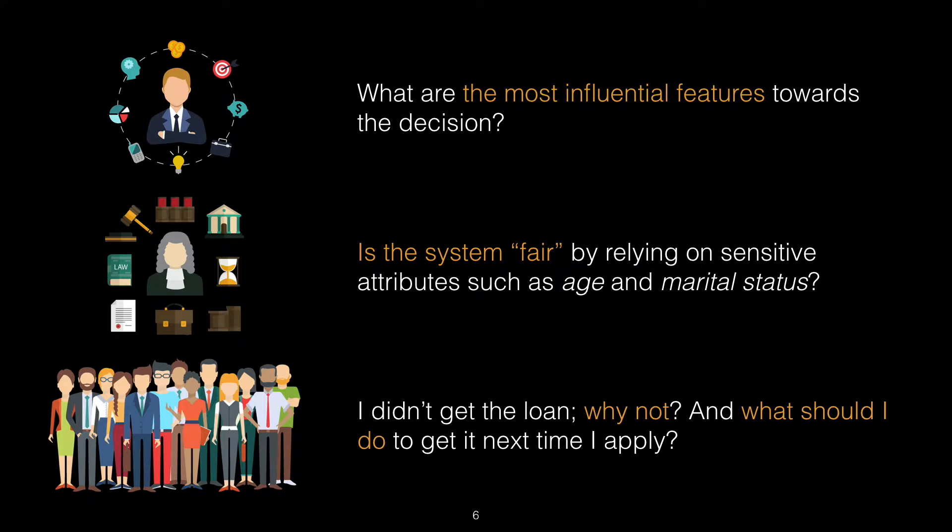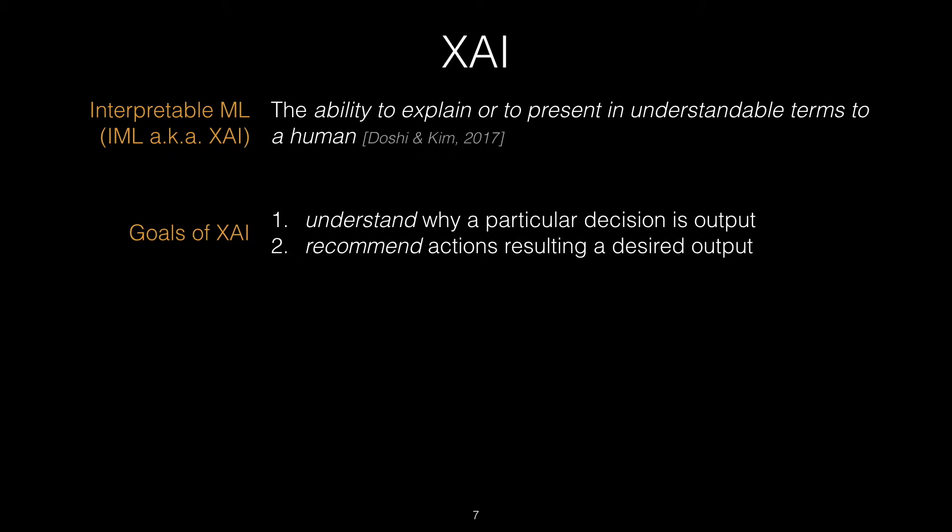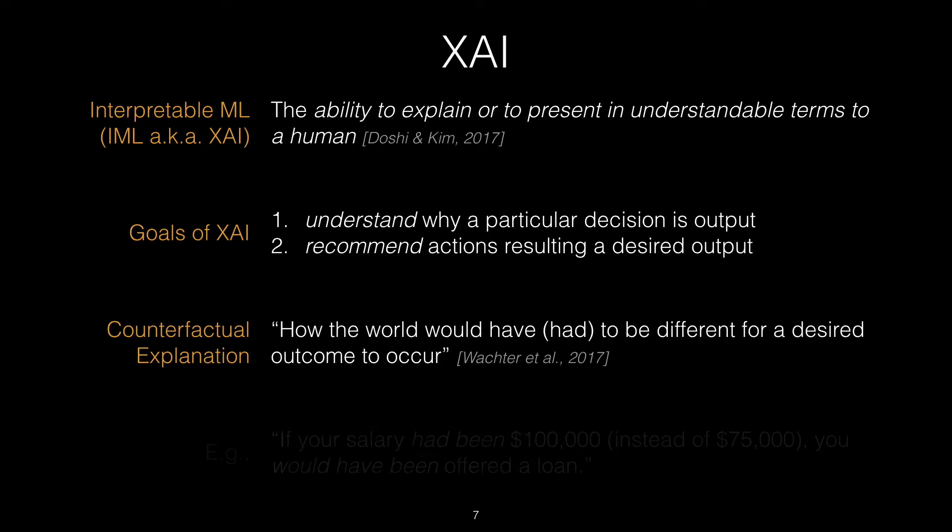Answering these questions is the concern of the field of interpretable machine learning, or XAI. Among the definitions of XAI, we adopt the one by Doshi-Velez and Kim, which is the ability to explain or to present in understandable terms to a human. XAI has two broad goals: firstly, to understand why a particular decision is output, and second, to recommend actions resulting in a desired output.